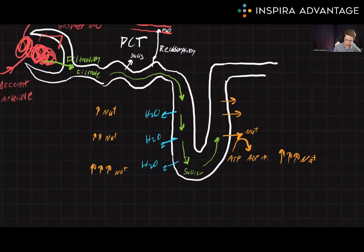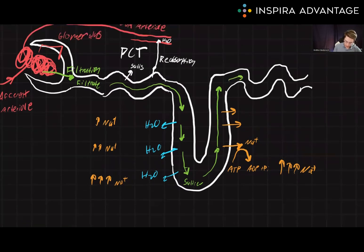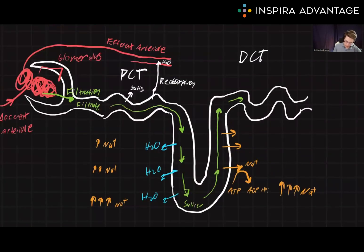The filtrate will now be much more concentrated as we head up to the distal convoluted tubule. Here at the distal convoluted tubule, we reabsorb more water, as well as some salts.